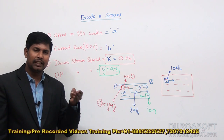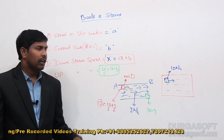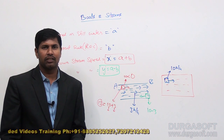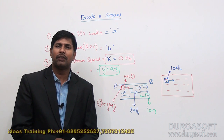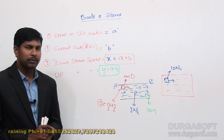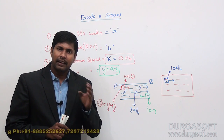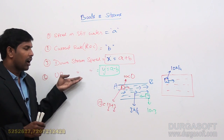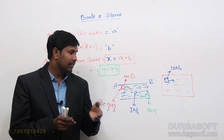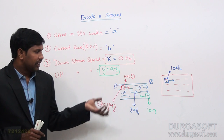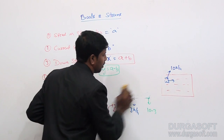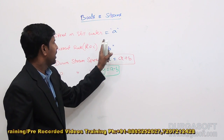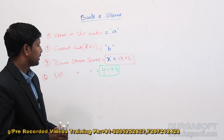These are the four speeds. Once you understand these four definitions, it is very easy to solve any question from this topic. Speed in still water is the speed in constant, non-flowing water. Current rate is the speed of the flowing river. Downstream speed is when the boat goes in the same direction as the river — speed is increased. Upstream speed is when the boat goes against the river. The relations are: x = a + b and y = a − b, where a is speed in still water and b is current rate.